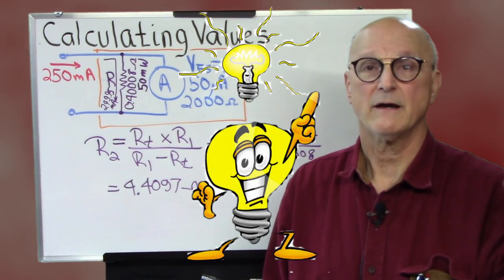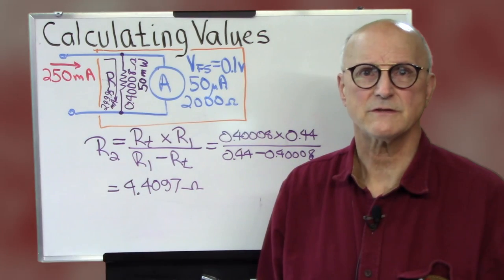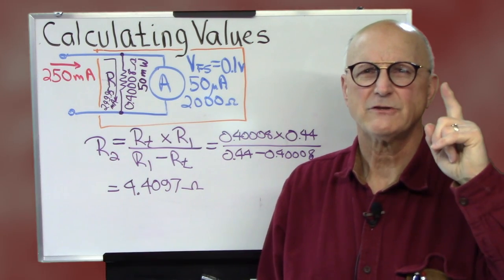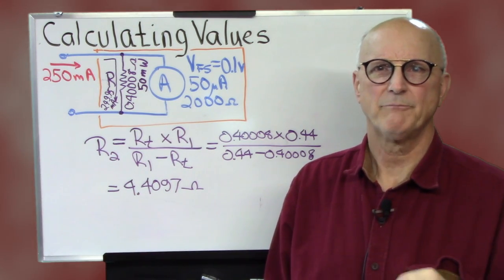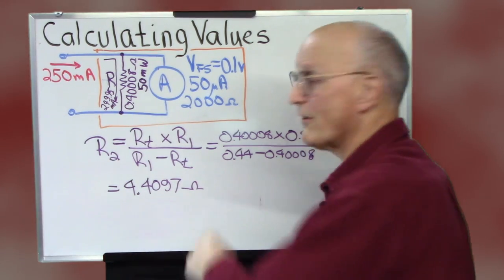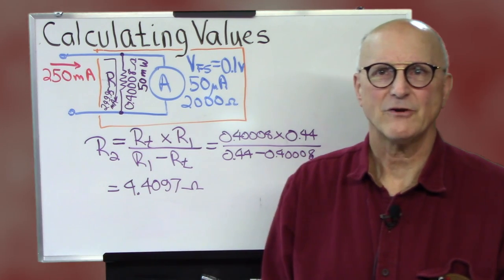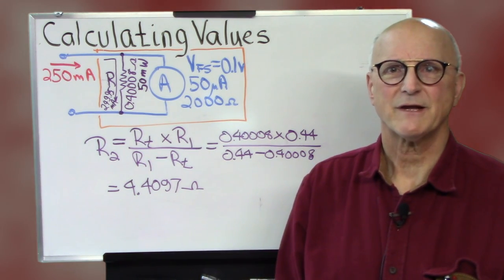And I think, wait a second, I got a whole passel of 2.2 ohm resistors. What if I took two of those and put them in series? I get 4.4 ohms. So, my final configuration looks something like this.